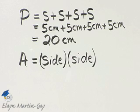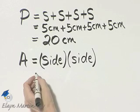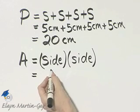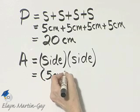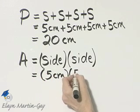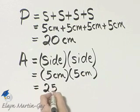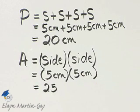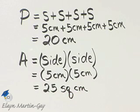Now let's also find the area of the square — that would be how many square units the square encloses. To find area, it's the length of the side times the length of the side. The length of the side is 5 centimeters, times 5 centimeters. 5 times 5 is 25, and centimeters times centimeters we call square centimeters. So the area enclosed by the square is 25 square centimeters.